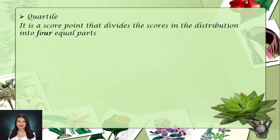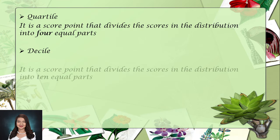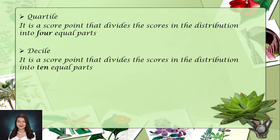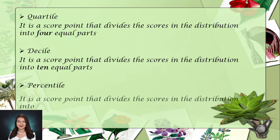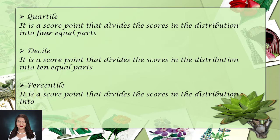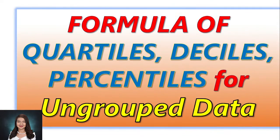So we have here the quartiles. Quartile is a score distribution that divides the scores into four equal parts. Next is the decile. Decile is a score point that divides the scores in the distribution into ten equal parts. When we talk about deciles, it came from the word 'deka,' which means ten. Next is the percentile. Percentile is a score point that divides the distribution into one hundred equal parts.